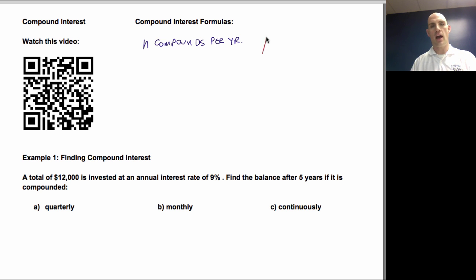It's going to be A, your amount that you have at the end, is equal to your principal times 1 plus r over n to the nt. And A is the amount at the end that you end up with. P is the principal.